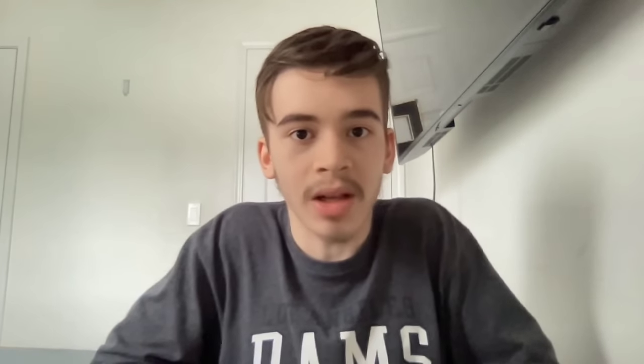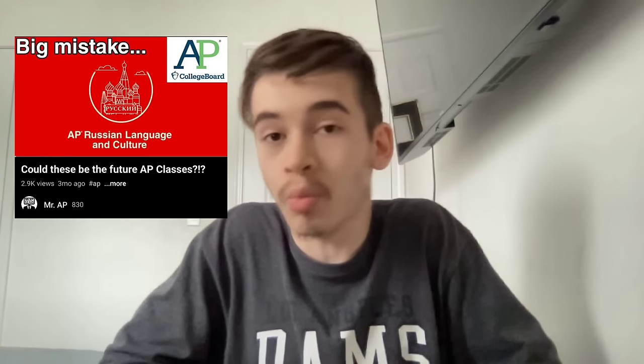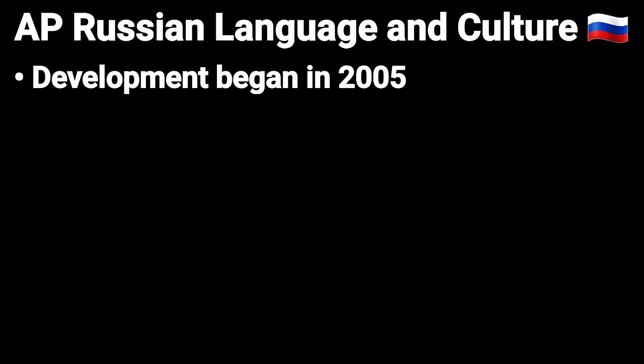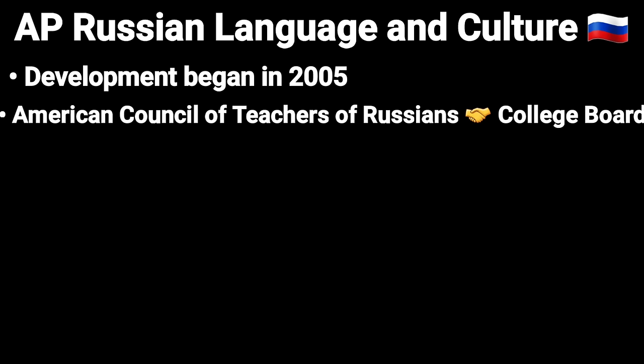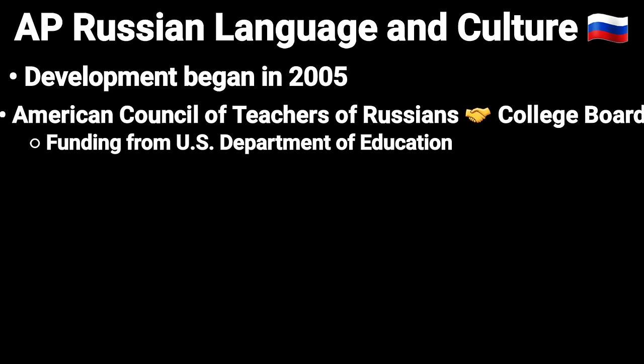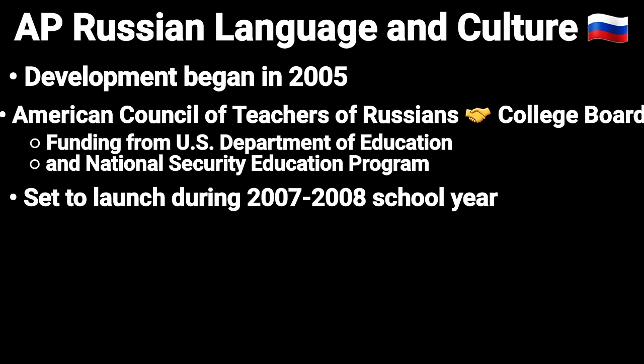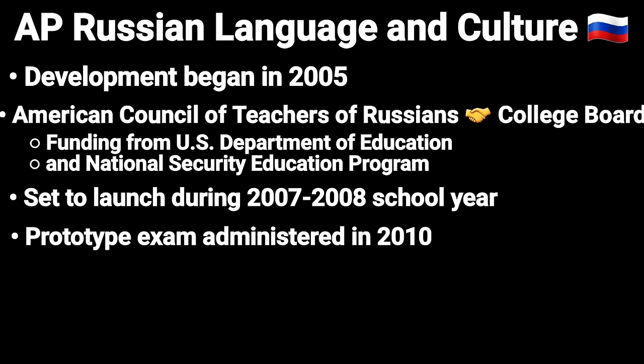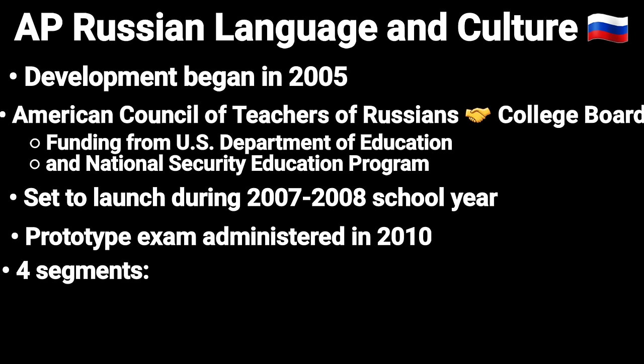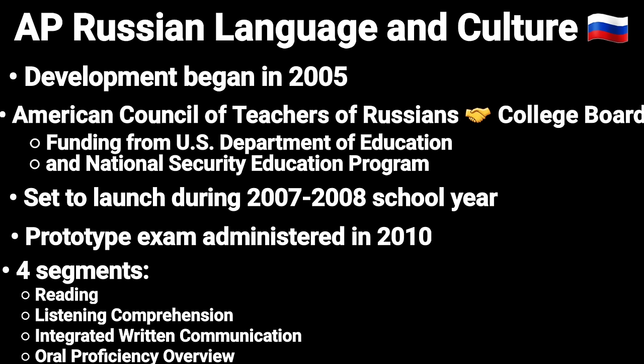Another AP language class is AP Russian Language and Culture. This was an actual AP at one time — proposed as an advanced placement course and examination, with development beginning in 2005. Development began with the American Council of Teachers of Russian in collaboration with College Board, and with funding from the U.S. Department of Education and the National Security Education Program. The program was meant to launch between 2007 and 2008. A prototype exam was administered to students in 2010, and an unofficial exam was created and distributed by the American Council for International Education, split into four segments: reading and listening comprehension, integrated written communication, and oral proficiency.